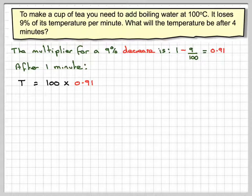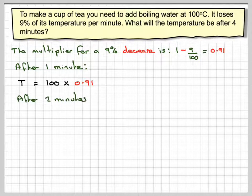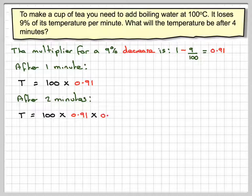Now I'm not really interested in working that out. After two minutes that will be 100 times 0.91. Again you multiply it by 0.91.